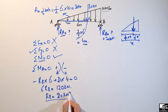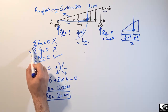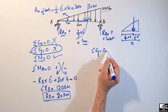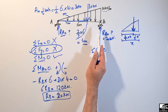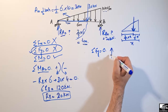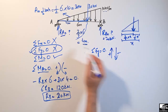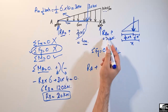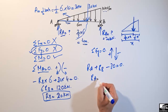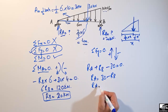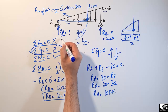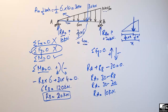Now to find Ra, since we have only one unknown remaining, we can use the summation of vertical forces equal to zero. Taking upward forces as positive and downward as negative: Ra + Rb − 30 = 0. So Ra = 30 − Rb = 30 − 20 = 10 kilonewton. Ra comes out to be 10 kilonewton. This is how you analyze a triangular load on a simply supported beam.